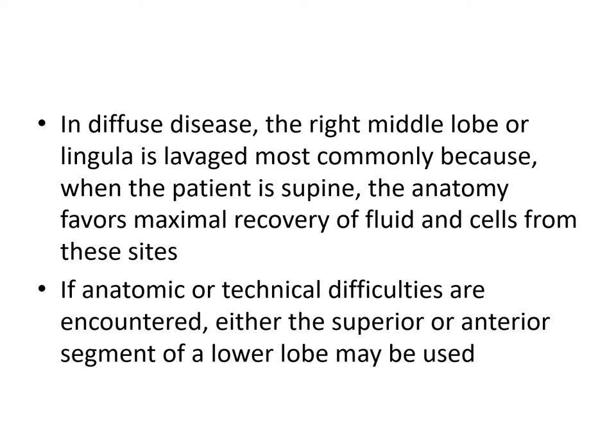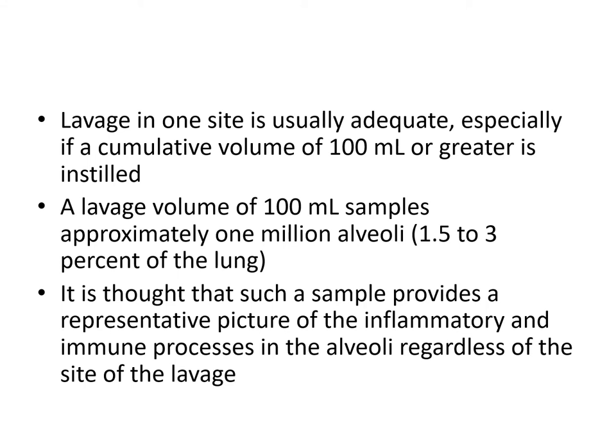Sometimes there may be anatomic or technical difficulties negotiating the bronchoscope into the right middle lobe or lingula. In such cases, other lobes like the superior or anterior segment of the lower lobe may be used, as these are relatively easy to negotiate. Lavage from one site is usually adequate, especially if a cumulative volume of 100 ml or greater is instilled. This 100 ml sample approximately samples about 1 million alveoli — about 1.5 to 3% of the lung — providing a representative picture of inflammatory and immune processes in the alveoli regardless of the lavage site.